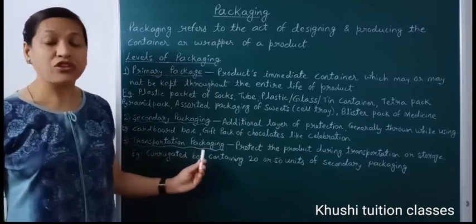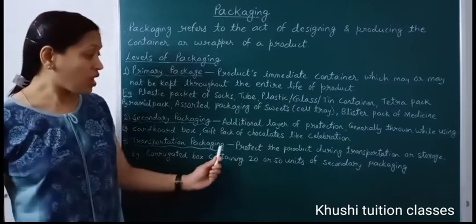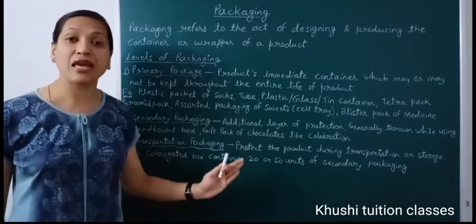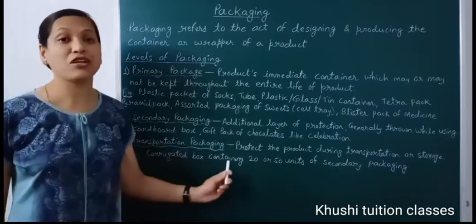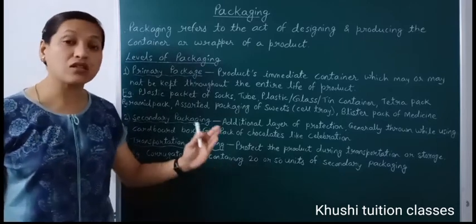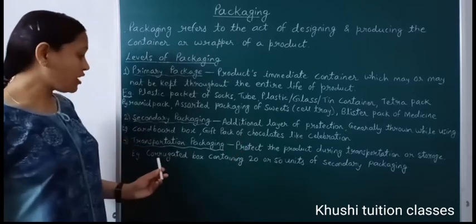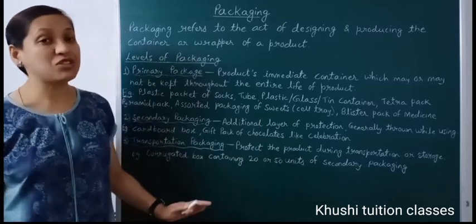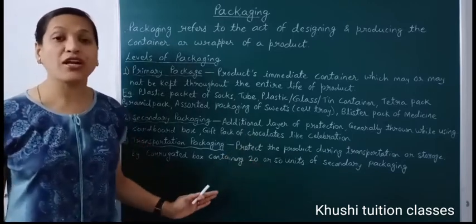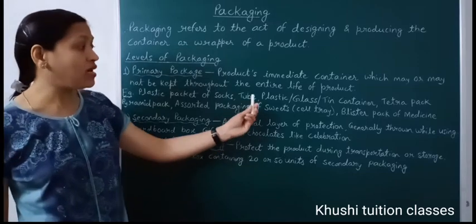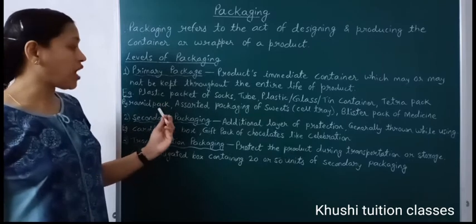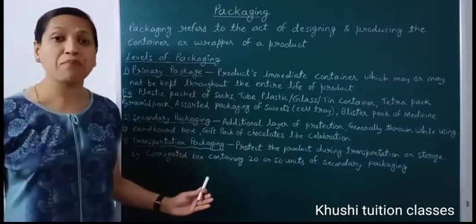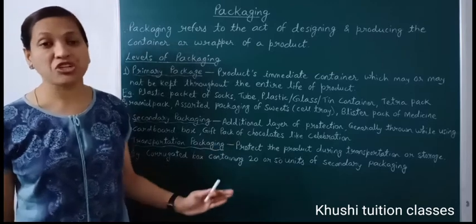Now the third is transportation packaging, also called tertiary packaging. It protects the product during transportation and storage. अब product को store करने के लिए या एक place से दूसरी place पर पहुंचाने के लिए transportation packaging बहुत important होती है। This is the third layer of protection to the product. For example, corrugated box containing 20, 50, or 100 units of secondary packaging — जैसे biscuits के बहुत से packs इस corrugated box में होते हैं, या glass, plastic container, tetra pack, pyramid pack — इनकी बहुत सारी units एक corrugated box में pack की जाती हैं — that is transportation packaging।